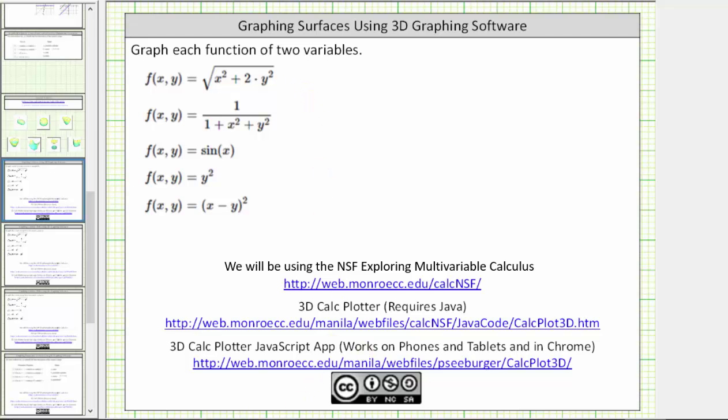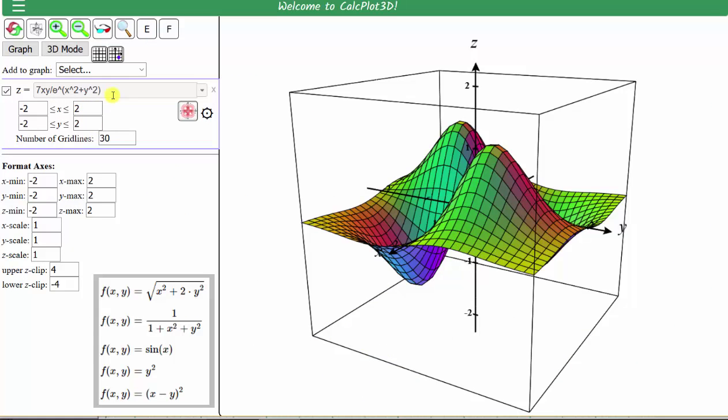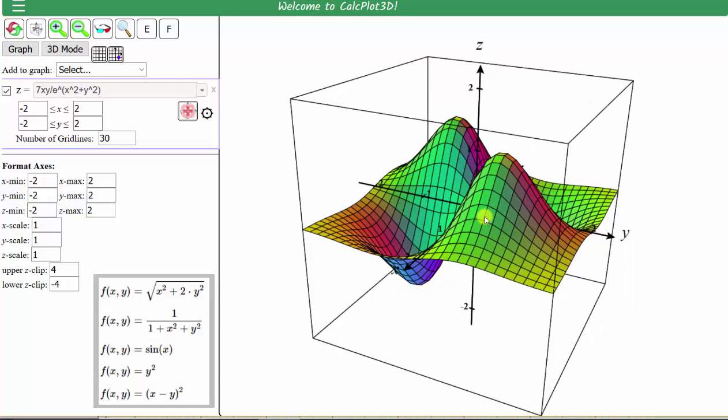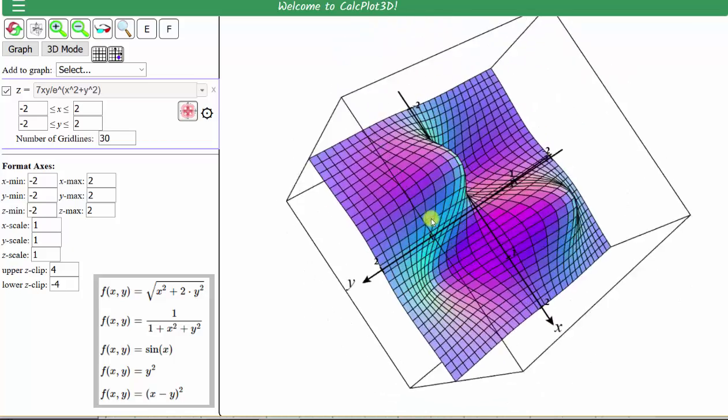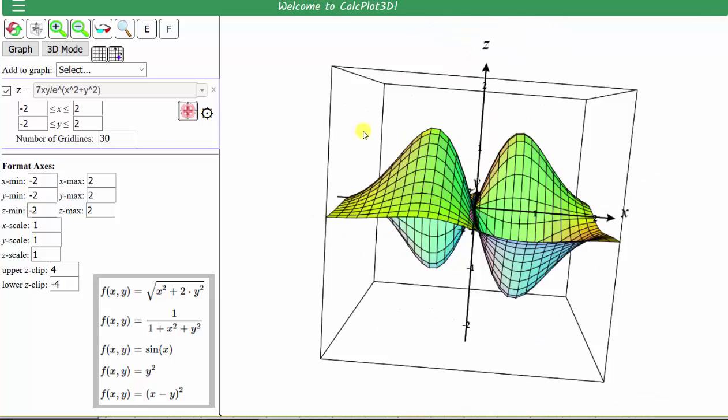Let's graph our first surface. After opening the app, this is the default surface that is graphed, given by the function shown here on the left. Notice how we can rotate and manipulate this surface any way that we want.